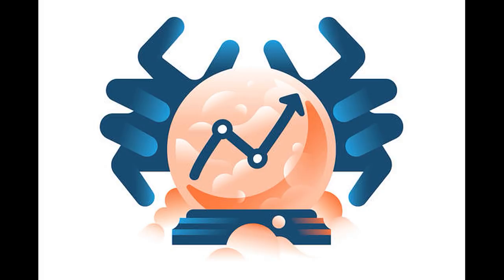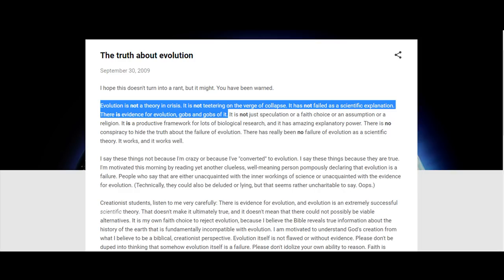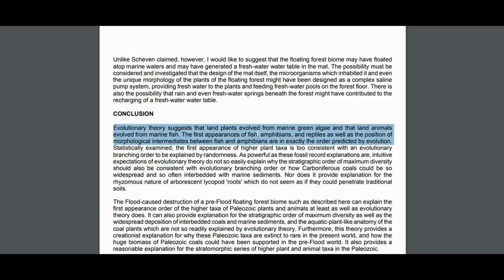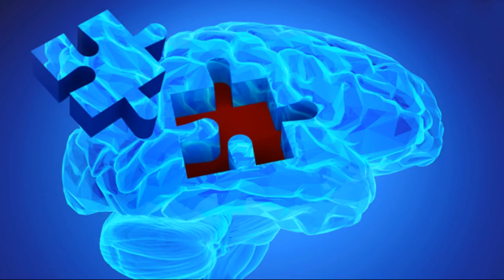So what does all of this mean? It means that evolution works. It makes accurate, specific predictions about what should be found both in the fossil record and our own genomes. To quote Young Earth creationist Todd Wood: 'Evolution is not a theory in crisis. It is not teetering on the verge of collapse. It has not failed as a scientific explanation. There is evidence for evolution — gobs and gobs of it.' Or, to quote Young Earth creationist Kurt Wise: 'Evolutionary theory suggests that land plants evolved from marine green algae and that land animals evolved from marine fish. The first appearances of fish, amphibians, and reptiles, as well as the position of morphological intermediates between fish and amphibians, are in exactly the order predicted by evolution.' Thus, if evolution were supplanted by some new theory, that theory would necessarily have to take into account all of the successful predictions made by evolution. You cannot make a new theory by ignoring valid data from the old one — that old data must be built upon. So, thanks for watching, and I'll see you next time.